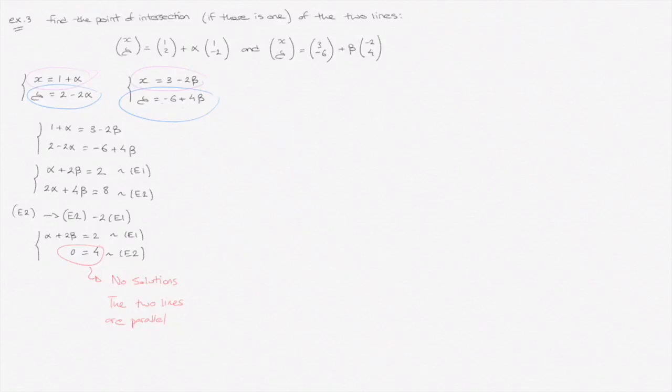So remember, when you see 0 equals 4, or 0 equals k, where k is some non-zero number, that's what we're dealing with.